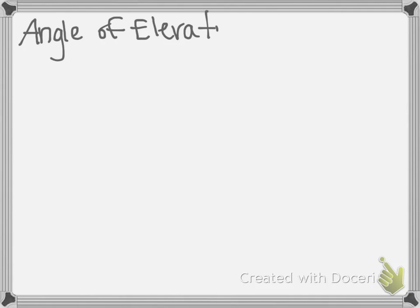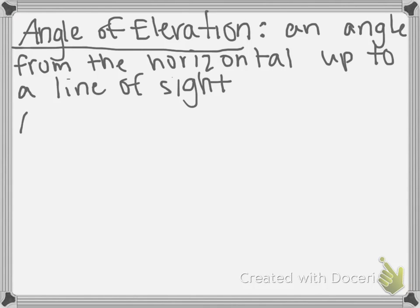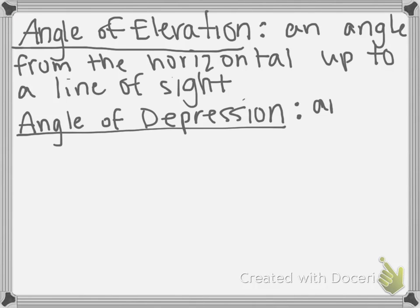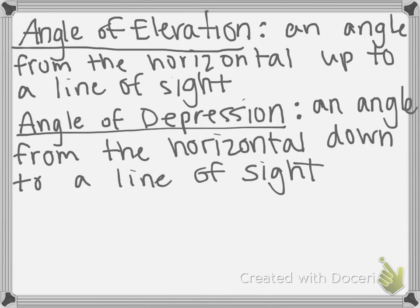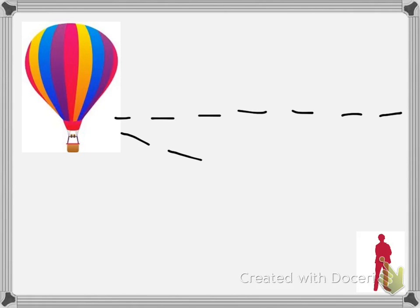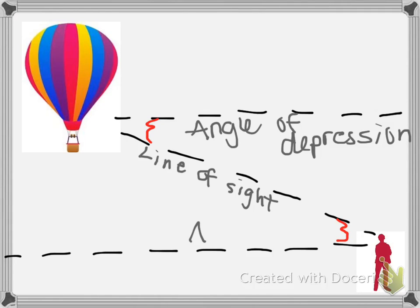The next thing we are going to look at is an angle of elevation and an angle of depression. An angle of elevation is an angle from the horizontal up to a line of sight. An angle of depression is an angle from the horizon down to a line of sight. If we have a hot air balloon and a person looking at it, the angle of depression is shown going downward, and the line through the middle acts as the hypotenuse and is our line of sight. The angle of elevation is the upward angle down by the person.